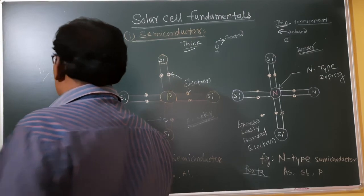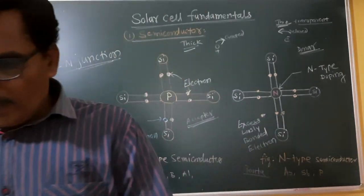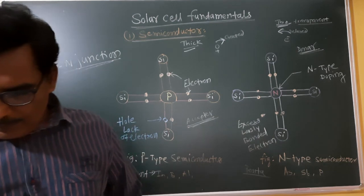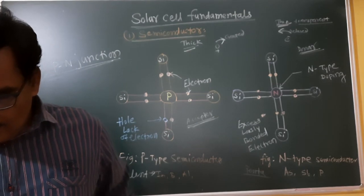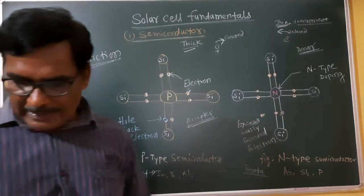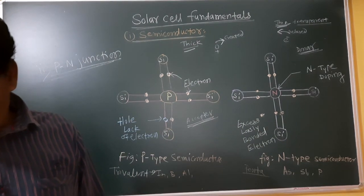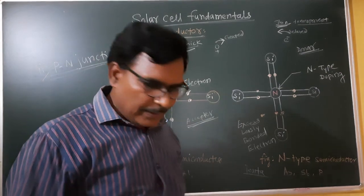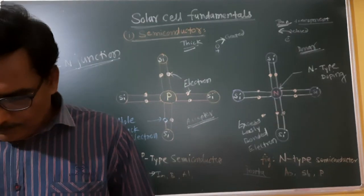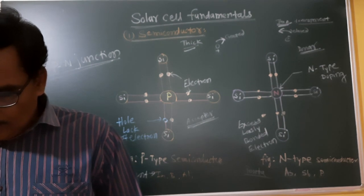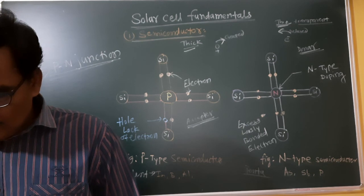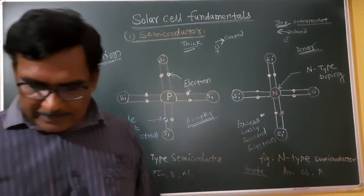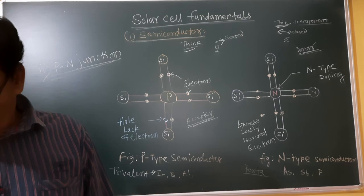The two solar cell fundamentals are semiconductor and PN junction. In the PN junction, P-type and N-type silicon layers can use materials such as cadmium sulphide, gallium arsenide, zinc sulfide, gallium antimonide, cadmium telluride, indium phosphide, and cadmium selenide. These are types of junctions used in solar cells. For a homojunction silicon cell, silicon is the best material.